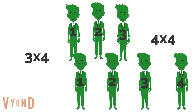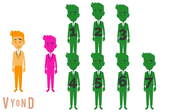The distributive property says that a multiplication fact can be broken apart into the sum of 2 other facts. What is 5 times 4? What is 2 times 4? What is 3 times 4? What is 4 times 4? 5 times 4 equals 20, 2 times 4 equals 8, 3 times 4 equals 12, and 4 times 4 equals 16. 20 plus 8 is another way to find 7 times 4.